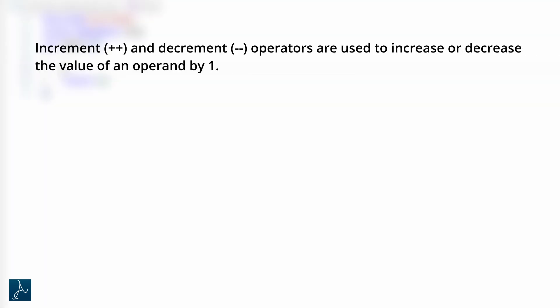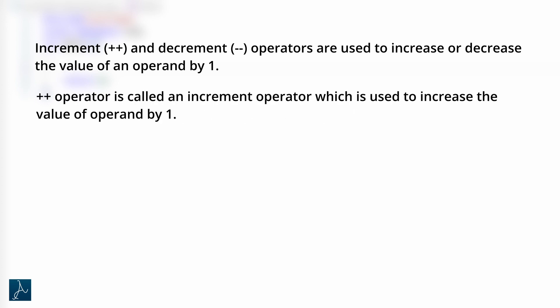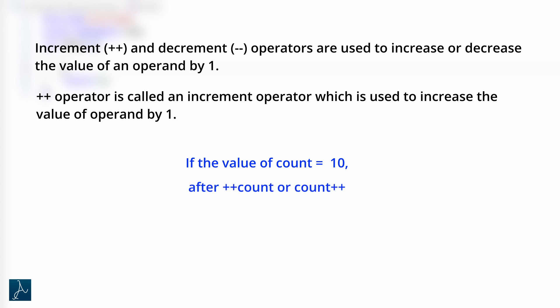Increment and decrement operators are used to increase or decrease the value of the operand by 1. The plus plus operator is called an increment operator, which is used to increase the value of the operand by 1. This means if the value of variable count is 10, after plus plus count or count plus plus, the new value of count will be 11. Note that plus plus can be prefix or postfix depending on whether it is used before or after the operand.